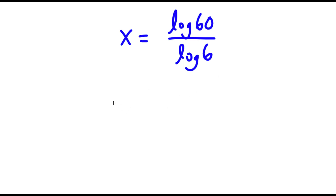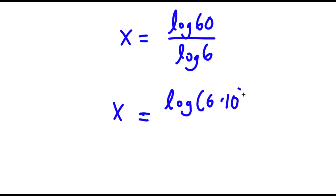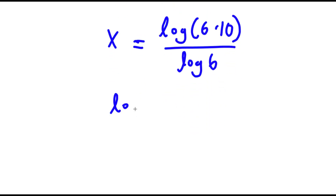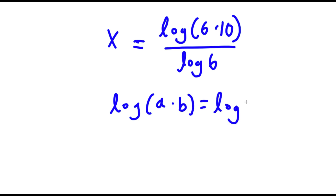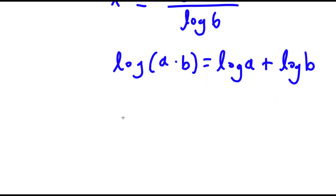Now, log 60 I'm going to rewrite as log of 6 times 10. I have this over log 6. So if I have something in the form log of a times b, this is equal to log a plus log b. So log 6 times 10, that's going to equal log 6 plus log 10.